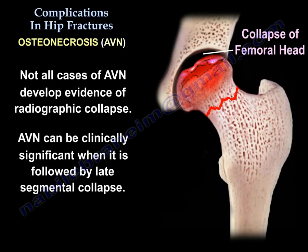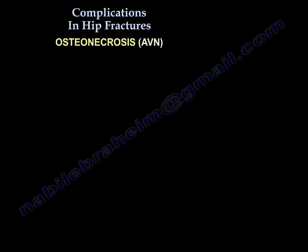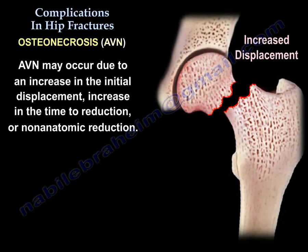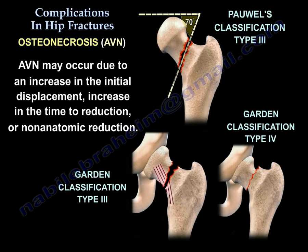Not all cases of AVN develop evidence of radiographic collapse. AVN alone is not of clinical significance unless late segmental collapse occurs. Late segmental collapse can be seen as early as 6 to 9 months following the fracture, but is usually recognized by the second year, and can be excluded if it doesn't happen by the third year. AVN can occur due to increased initial displacement, increased time to reduction, or non-anatomic reduction.